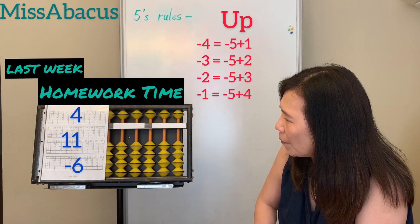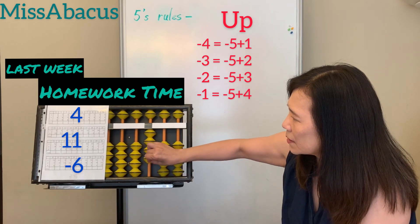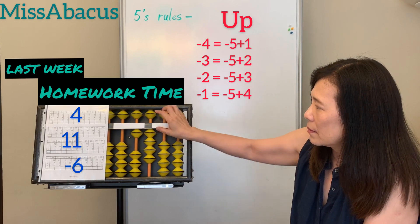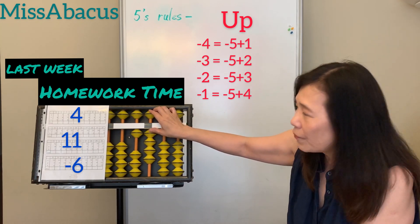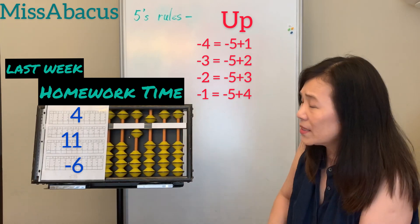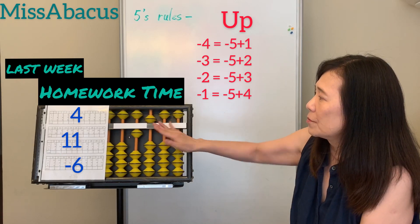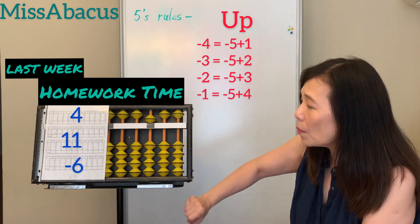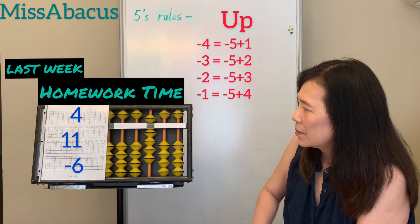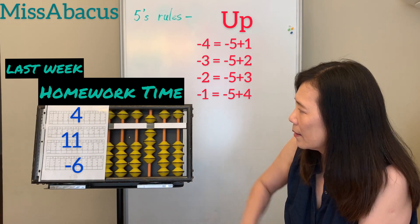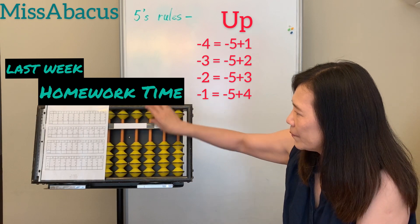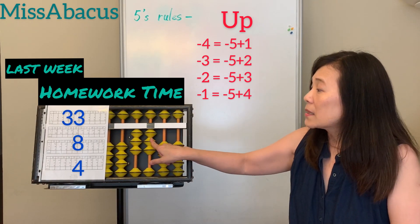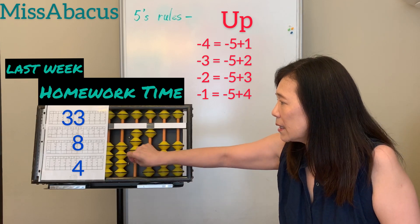Number 34: 4 plus 11 — ten and one. Down 5, down 4. Then take away 6: you only have 5 — for the 6, take away 10, plus 4 back. Then 5 — answer: 9. Let's do number 35: 33 plus 8. Plus 8 is minus 2, plus 10.